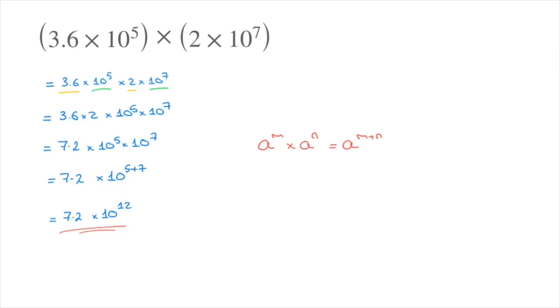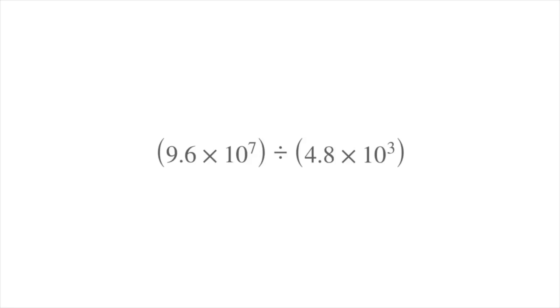And we're done — we've just multiplied these two numbers in standard form. Let's look at another example. Here we have two numbers written in standard form: 9.6 times 10 to the power of 7, and 4.8 times 10 to the power of 3.